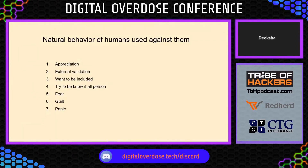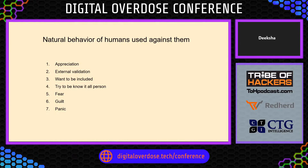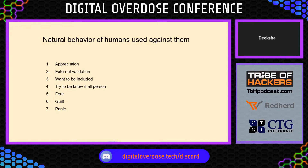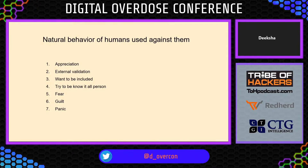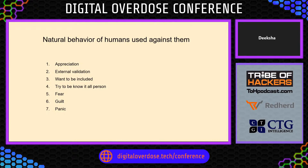What are the natural behaviors of humans that can be used against them? If an attacker is talking to you in person, he might be very observant of your nature. He might appreciate you and provide external validation. If you're feeling left out, he might make you feel welcomed or included in a group. If you're trying to be a know-it-all, he could boost your ego. He could do anything to gain your trust and take information from you. Other emotions that can be manipulated and used against you include fear, guilt, and panic.